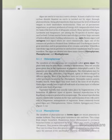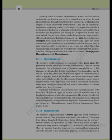Algae are useful to humans in various ways. At least half of the total carbon dioxide fixation on earth is carried out by algae through photosynthesis. Being photosynthetic, they increase the level of dissolved oxygen in their immediate environment. They are of paramount importance as primary producers of energy-rich compounds, which form the basis of food cycles of all aquatic animals. Many species of Porphyra, Laminaria and Sargassum are among the 70 species of marine algae used as food.